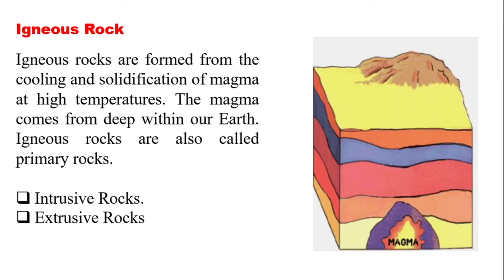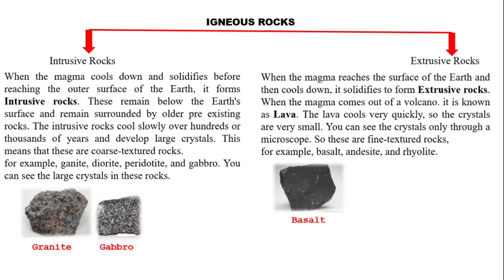The first rock type is igneous rock. You can see the image on the right. Igneous rocks are formed from the cooling and solidification of magma under high pressure. Due to the magma's high temperature and solidification, igneous rocks are formed and are also called primary rocks. Igneous rocks are of two types: intrusive rocks and extrusive rocks.